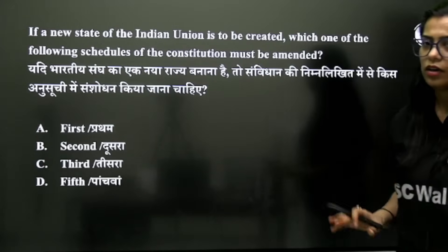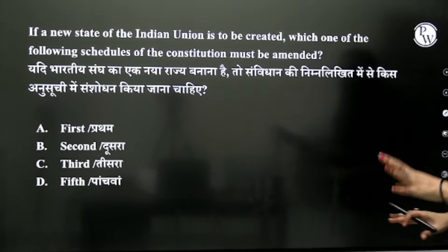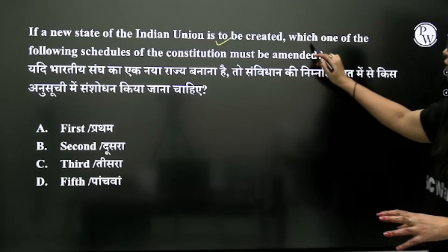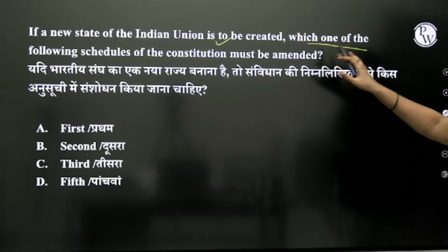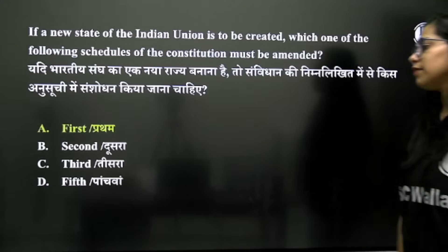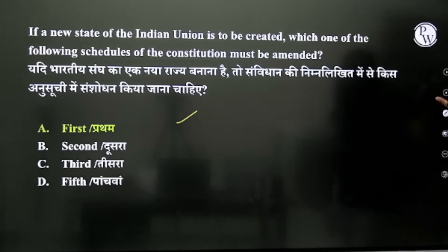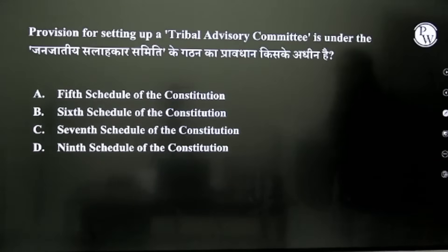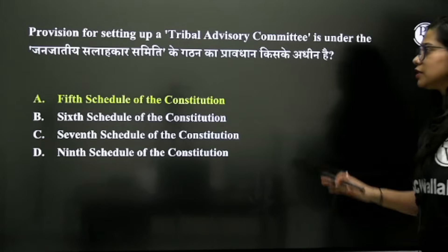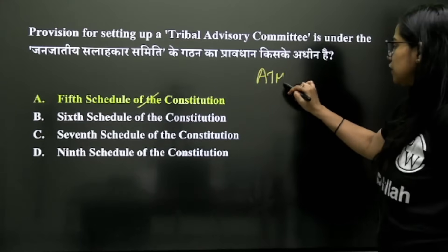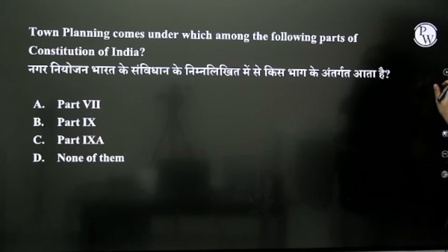The 5th Schedule is for all areas — not particular to four states, but for all. Which schedule must be amended if a new state is created in the Indian Union? And the Tribal Advisory Committee — in which schedule is it formed? Since it is for all areas, it falls under the 5th Schedule. If ATM Square were mentioned, the answer would be 6th Schedule.